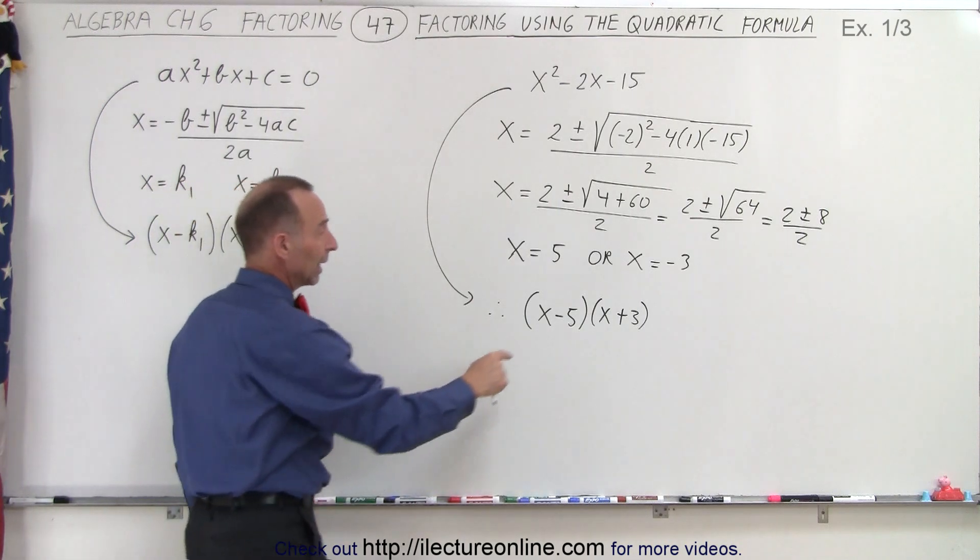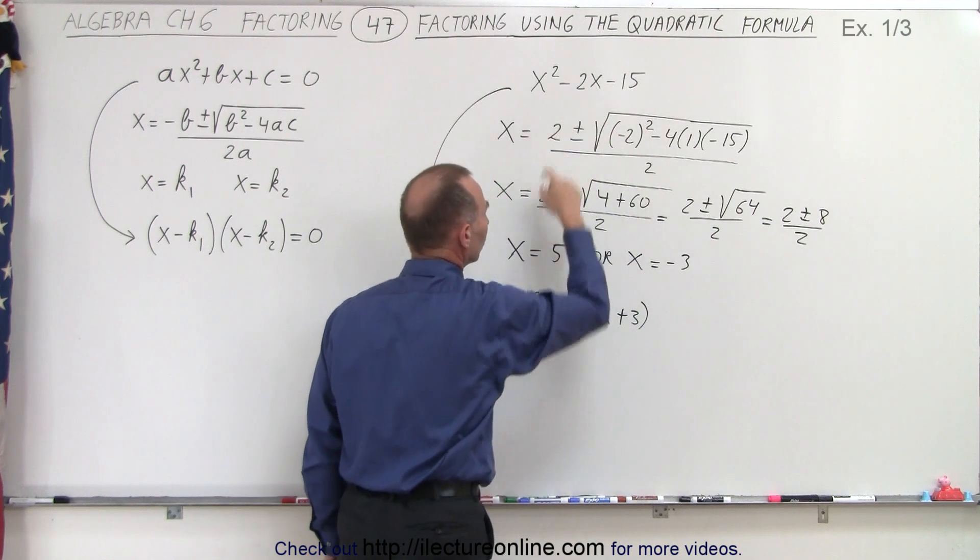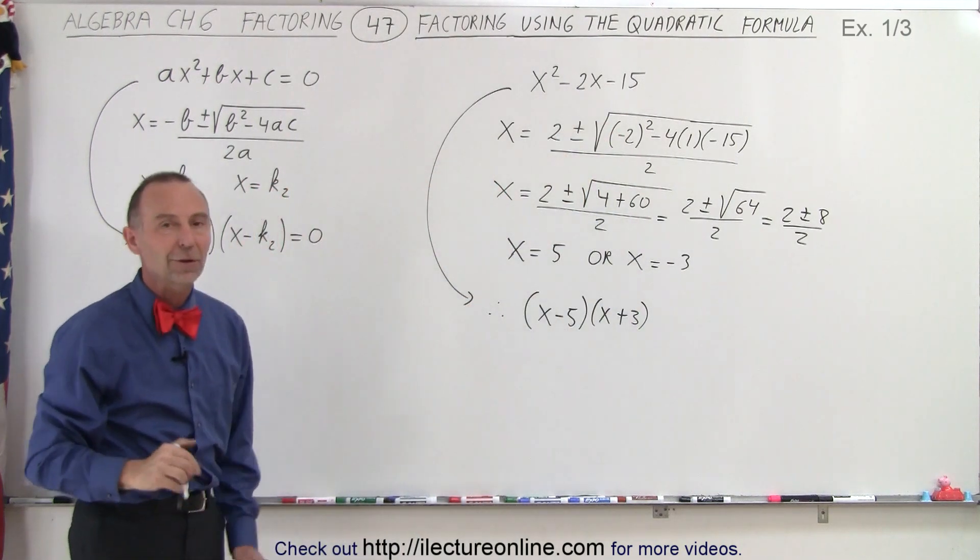You can work it out. -5 times 3 gives you -15. -5 plus 3 gives you a -2, and so you know that it is done correctly.